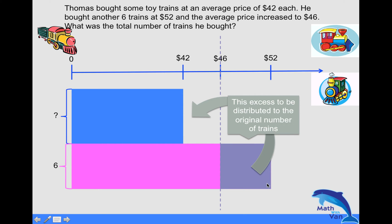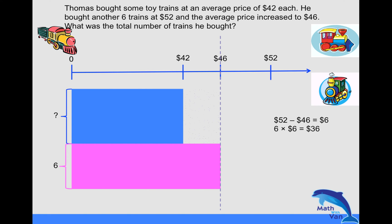And how do we work out this purple region here? What is the amount of money? Easy. You see the difference here, 52 minus 46, which is six dollars. And we know that there were six trains, so the total amount becomes six times six dollars, which is thirty-six dollars. So this thirty-six dollars will go into this portion here so that all the toy trains would be 46 dollars in average price.